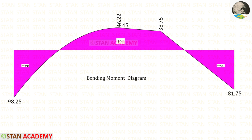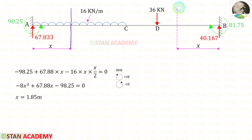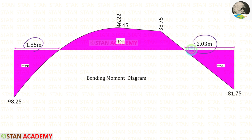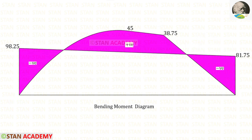Here we can see the complete bending moment diagram. At two points the bending moment becomes zero — these are called the points of contraflexure. We make sections at distance X from point A and from point B respectively. Using right-hand side rule for the first and left-hand side rule for the second, we find the positions of both points of contraflexure. Alternatively, we can draw the bending moment diagram by combining the mu diagram and mu-dash diagram. Thank you for watching.